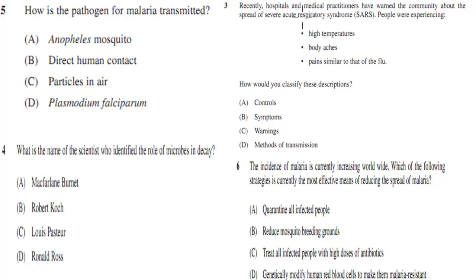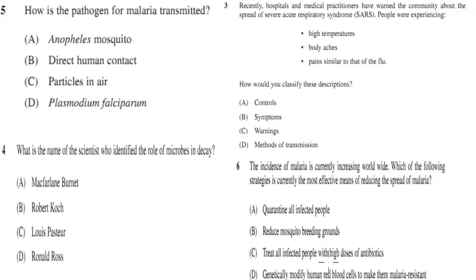The next question: hospitals and medical practitioners have warned the community about the spread of severe acute respiratory syndrome. People who experience high temperatures, body aches, and pains — symptoms like those of flu — how would you classify these descriptions: control symptoms, warnings, or methods of transmission? And: the incidence of malaria is currently increasing worldwide. Which strategy is currently the most effective means of reducing the spread of malaria? Options: quarantining infected people; reducing mosquito breeding grounds; treating with high-dose antibiotics; or genetically modifying human red blood cells to be malaria resistant.